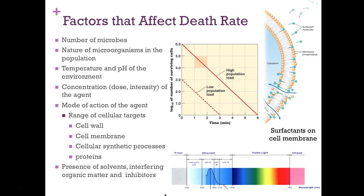Lastly, the presence of organic matter — saliva, blood, and feces — can inhibit the action of the disinfectant and even the action of heat. Surfactants on the cell membrane show how chemical agents go into the cell membrane and disrupt it, creating holes or pores that allow the chemical agent or water from the surrounding environment to move inside the cell while ions move out, disrupting the whole process.